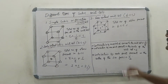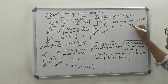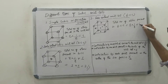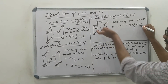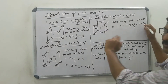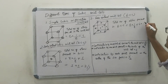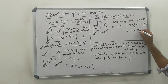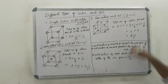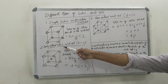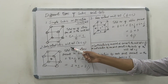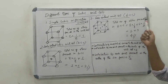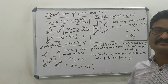For FCC: 8 corner atoms × 1/8, plus 6 face center atoms × 1/2, equals 1 plus 3, so the total number of atoms present in FCC is equal to 4.